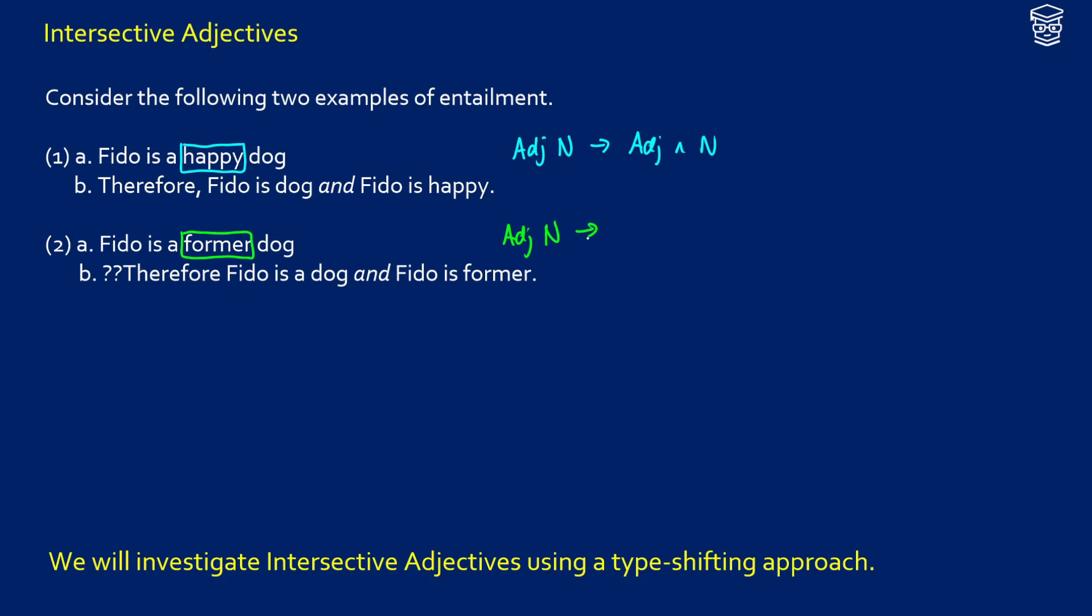But first of all, it doesn't make sense to say that Fido is former. That doesn't make sense. We need to have former something. And also, if Fido is a former dog, then it's implied that Fido is no longer a dog. So actually, in this case, it really just means not N in this case. But it could mean that in the past, of course, the presupposition is that Fido was in fact a dog in the past.